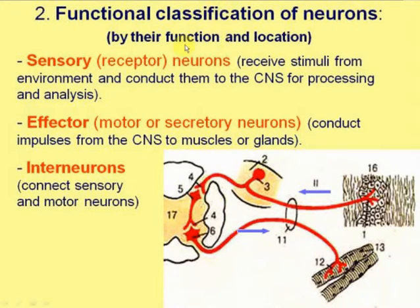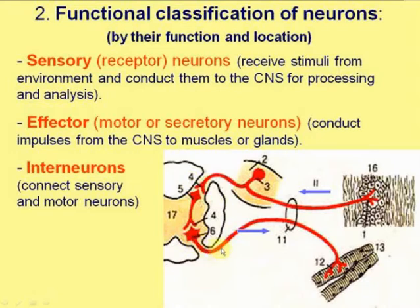The functional classification of neurons is based on their function and location in the reflex arc. There are three types: sensory or receptor neurons, whose dendrites start at receptors receiving stimuli from the environment and conduct them to the central nervous system for processing and analysis. Effector or motor neurons — the axon ends in skeletal muscle (motor neuron) or glands (secretory neuron). The third type is the interneuron or intermediate neuron, located between receptor and effector neurons.